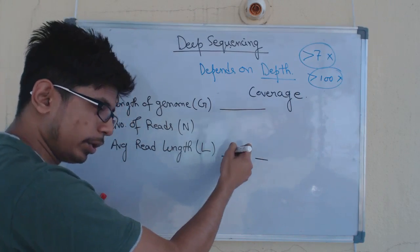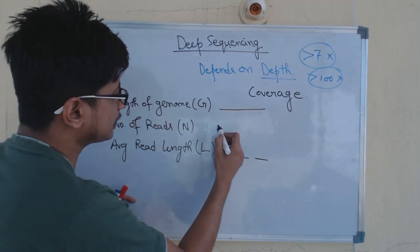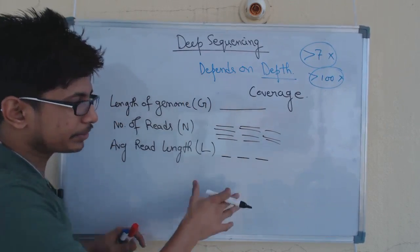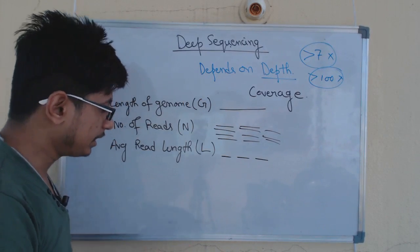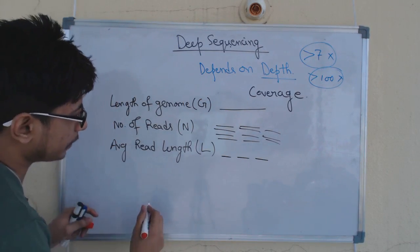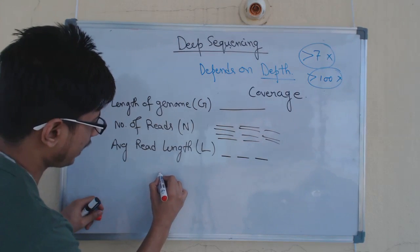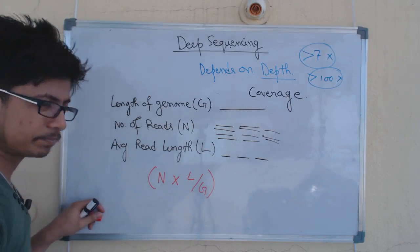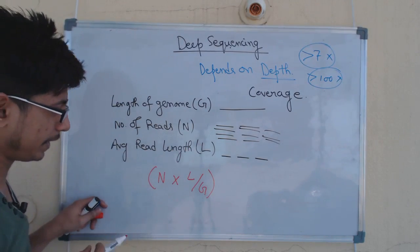Here is the complete genome, and here is the fragment of genome that you are loading and getting the data. This is how many times you are loading it to get the data. These are the three different parameters we take into account, and the formula is: N multiplied by L divided by G.